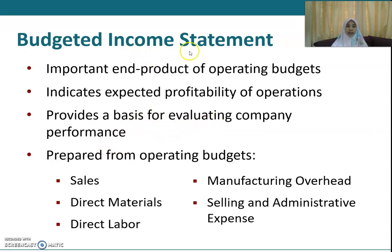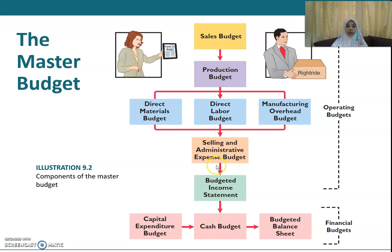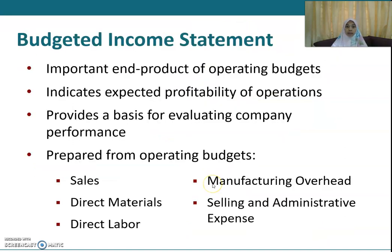How do you prepare the budgeted income statement? It is prepared from your operating budgets — from your sales, direct material, direct labor, manufacturing overhead, and selling and administrative expenses. So the budgeted income statement is prepared from all these sources, and from there you come out with your budgeted income statement.